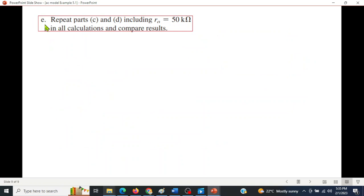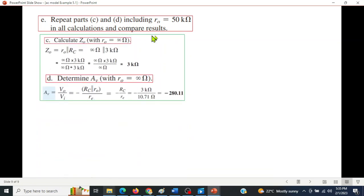Part e says repeat c and d including r_o to be 50 kΩ. Earlier we had assumed r_o to be infinity, now we have to take it to be 50 kΩ. This is what we had calculated with infinity: Z_o and A_v. Now we will again calculate for r_o = 50 kΩ. Same formula, putting 50 kΩ, solving: Z_o = 2.83 kΩ instead of 3 kΩ, so it has reduced.